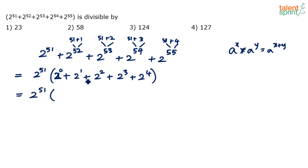Simplify this. So 2 power 51 is common. What do we have here? 2 power 0 is 1 plus 2 plus 4 plus 8 plus 16, which is 2 power 51 into 31. Into 31.